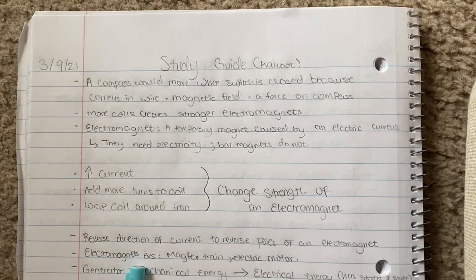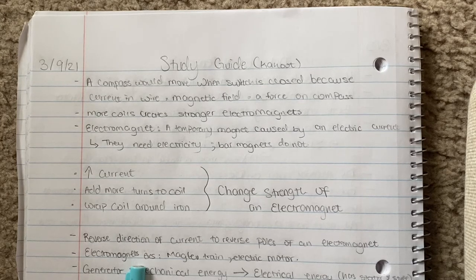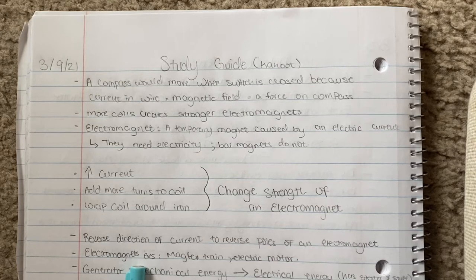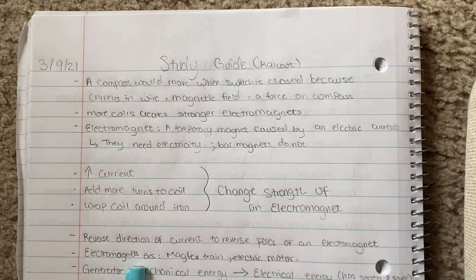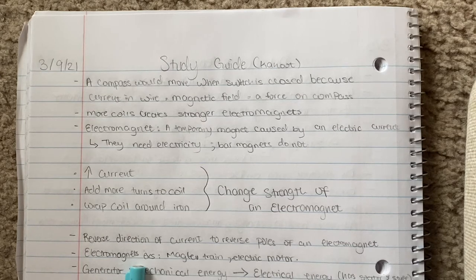The reason why a compass would move when a switch is closed: we know that when a switch is closed it means the circuit is running, which means there's electricity flowing through the circuit, and so that means there's current in the wire, which would then produce a magnetic field. A magnetic field would induce a force on the compass, which would then cause the compass needle to move.